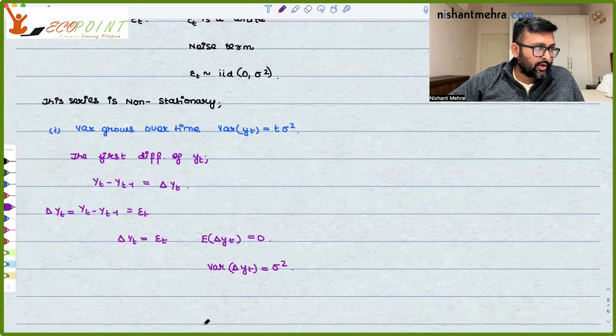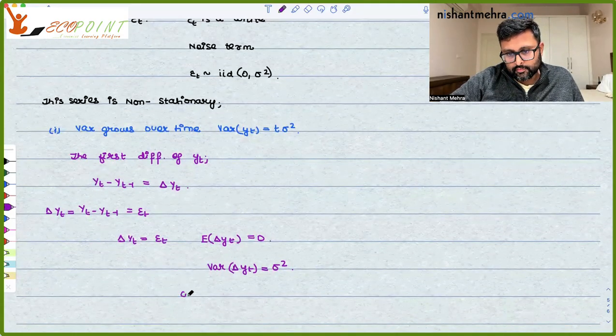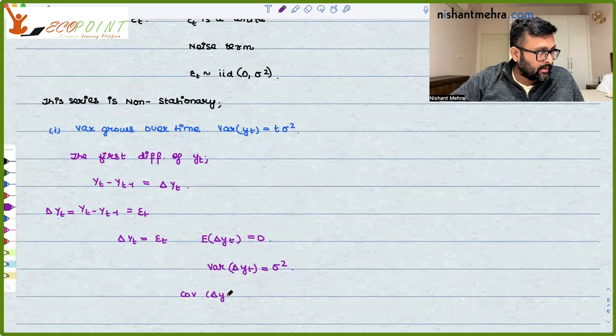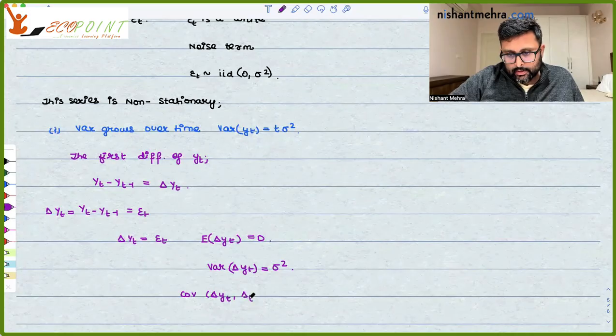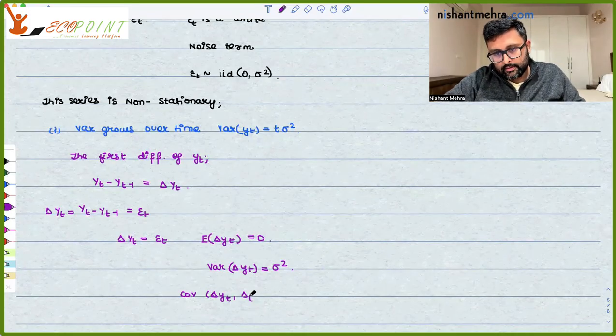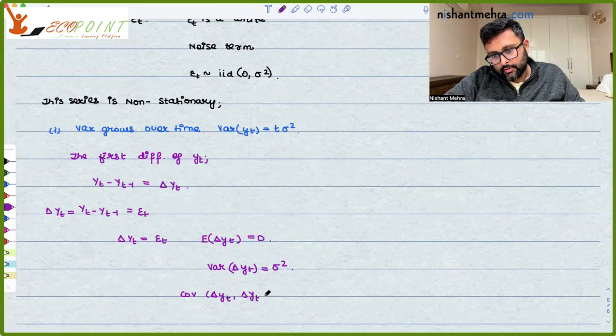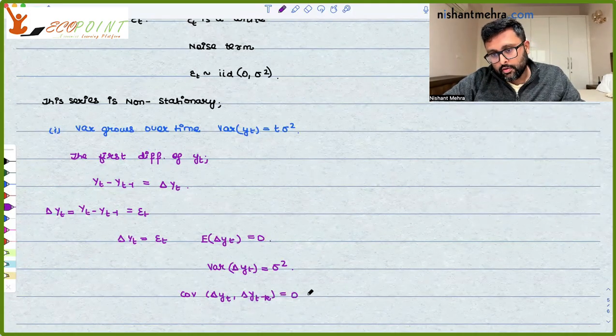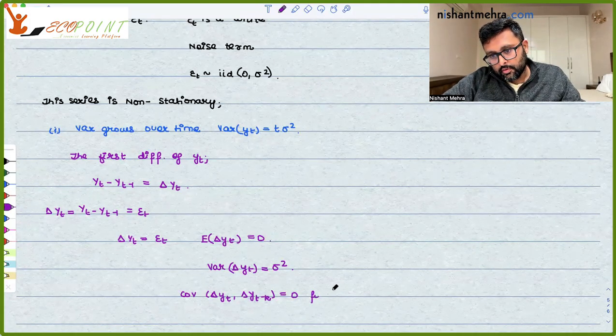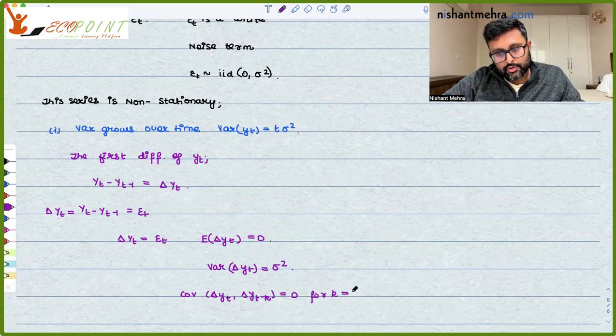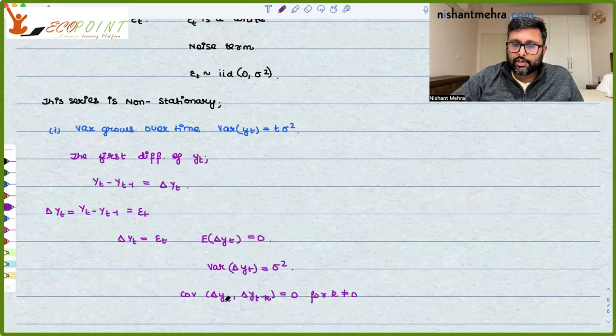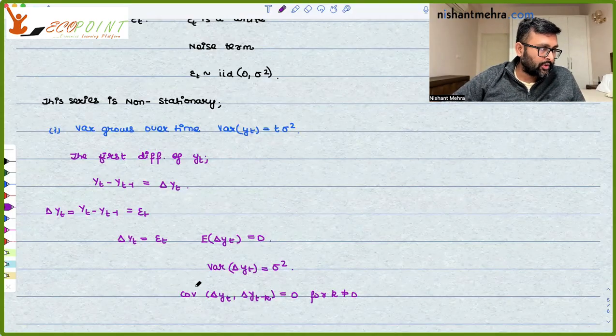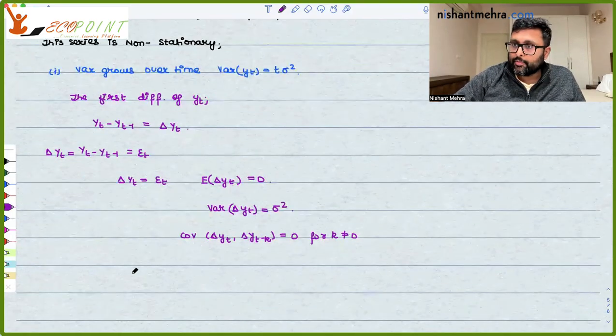And there is no autocorrelation. Covariance of delta yt and delta yt minus k, that is equal to 0 for k not equal to 0. So it has a constant variance, zero mean and no autocorrelation. So it is a difference stationary process.